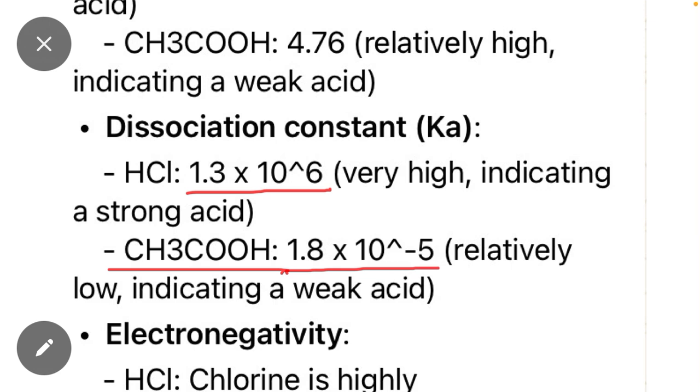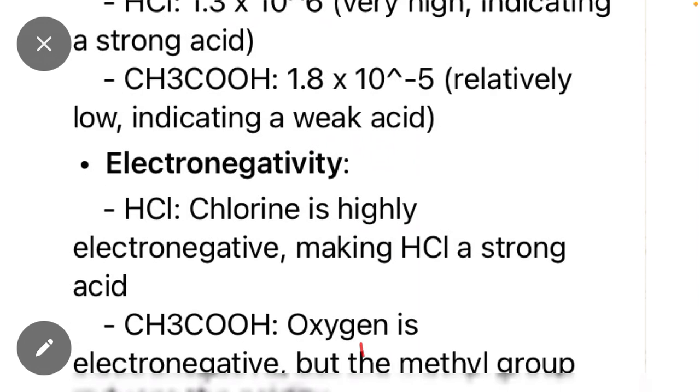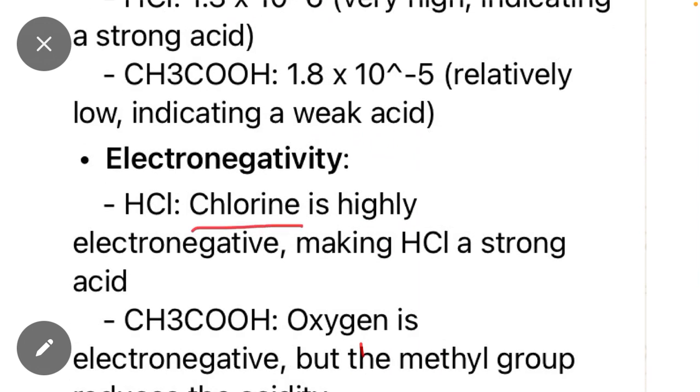Similarly, electronegativity: HCl contains chlorine, which is highly electronegative, making HCl a strong acid. While CH3COOH contains oxygen atom, which has electronegativity less than chlorine.